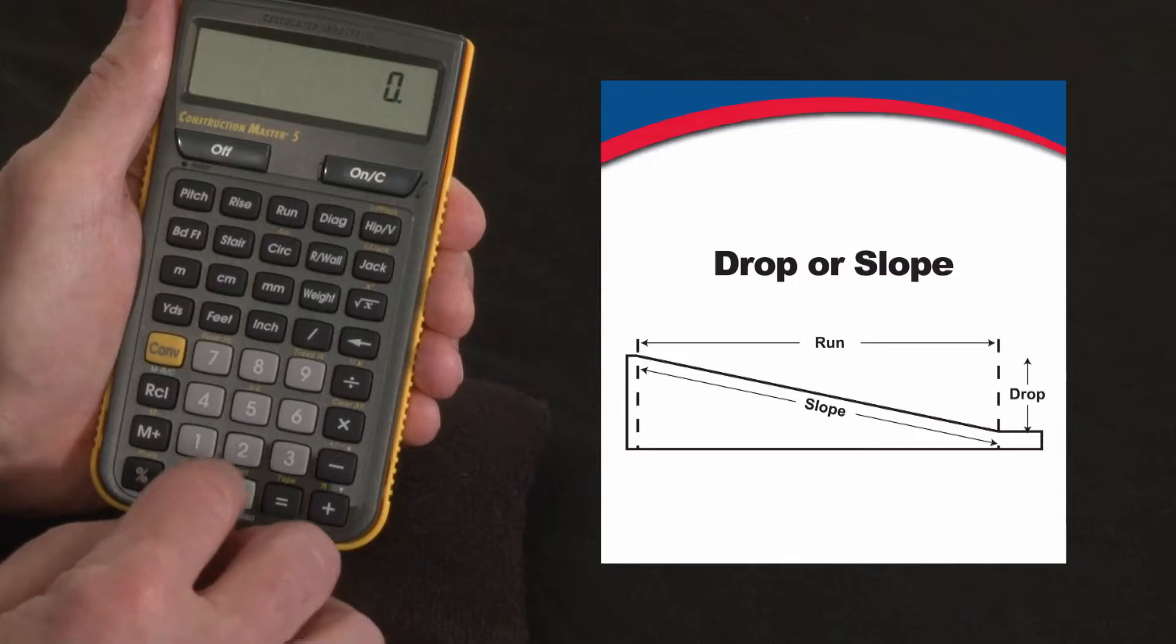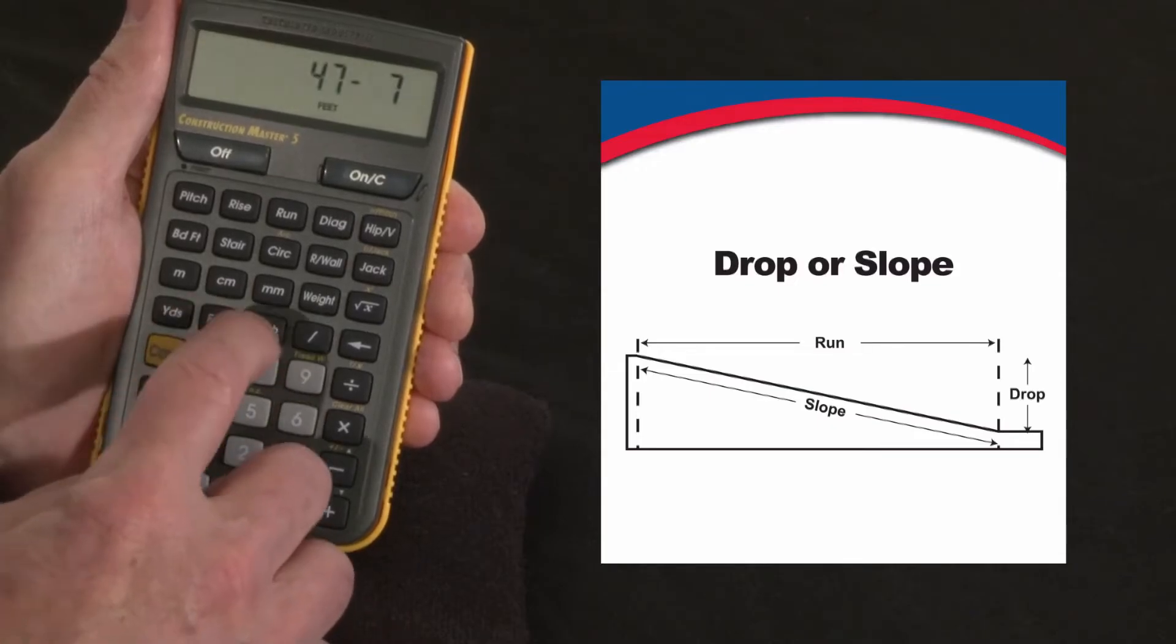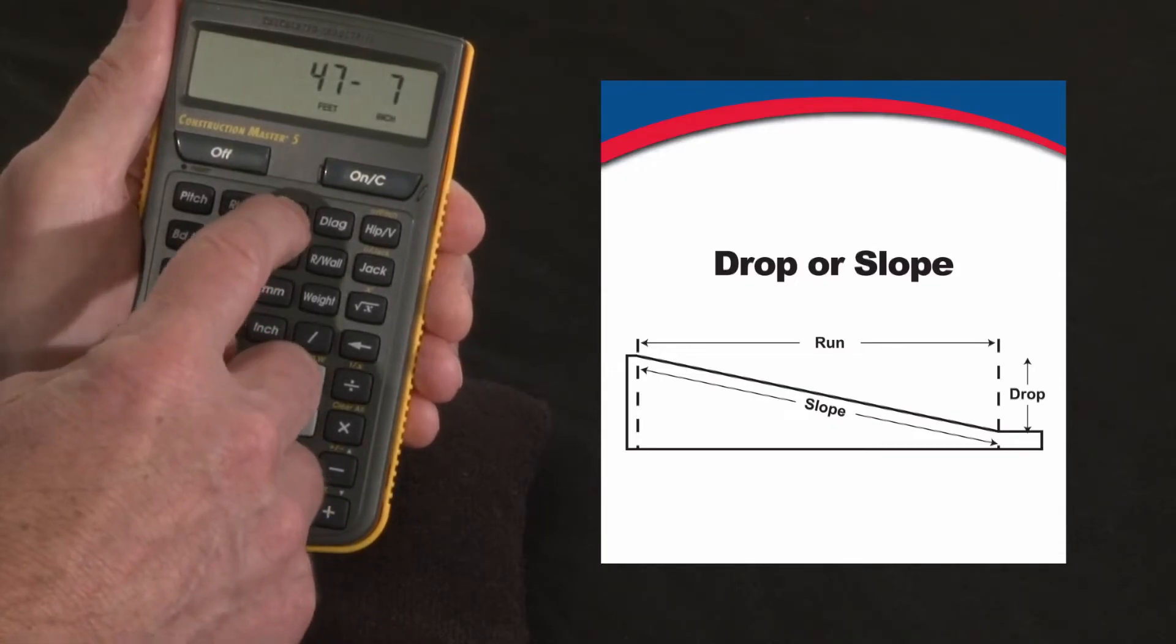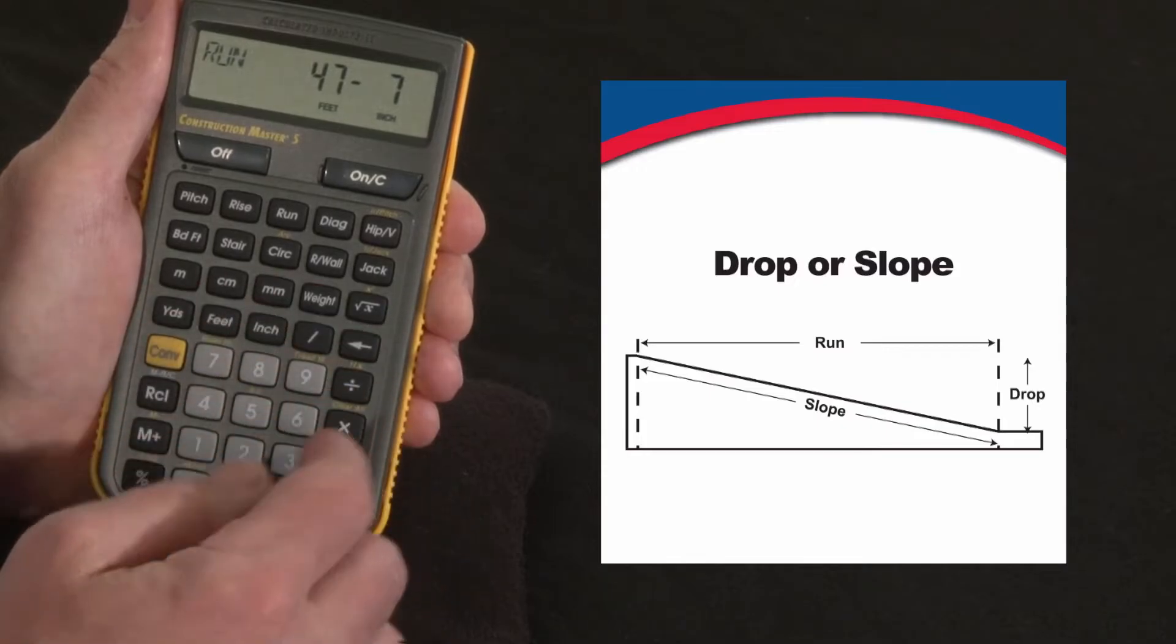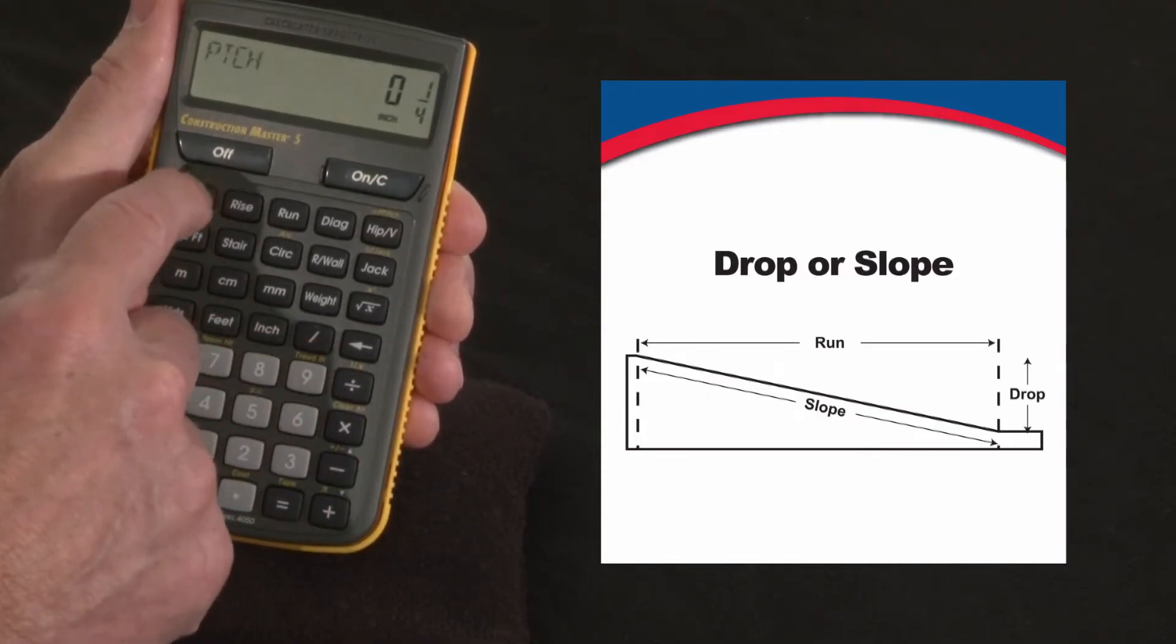Say that you've got a driveway that's 47 feet 7 inches long, we'll call that the run, and we want it to drop or fall at a quarter inch per foot. One quarter inch is our pitch.